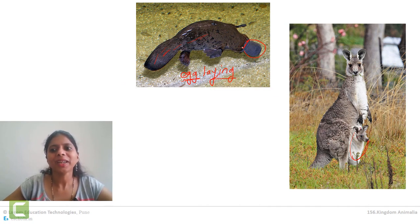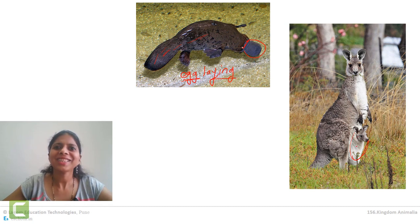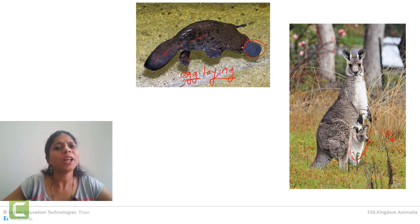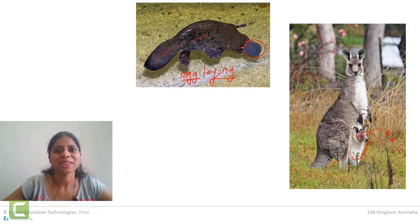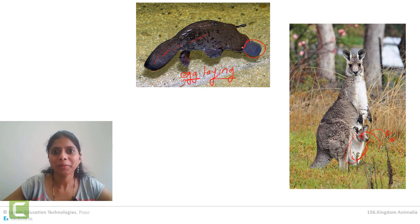This baby can come out, eat grass, and still if it feels unprotected outside — if some predator tries to attack the kangaroo baby — it will again jump into the pouch. This presence of the pouch on the abdomen for the protection as well as feeding of the baby is a peculiar characteristic of marsupial mammals.